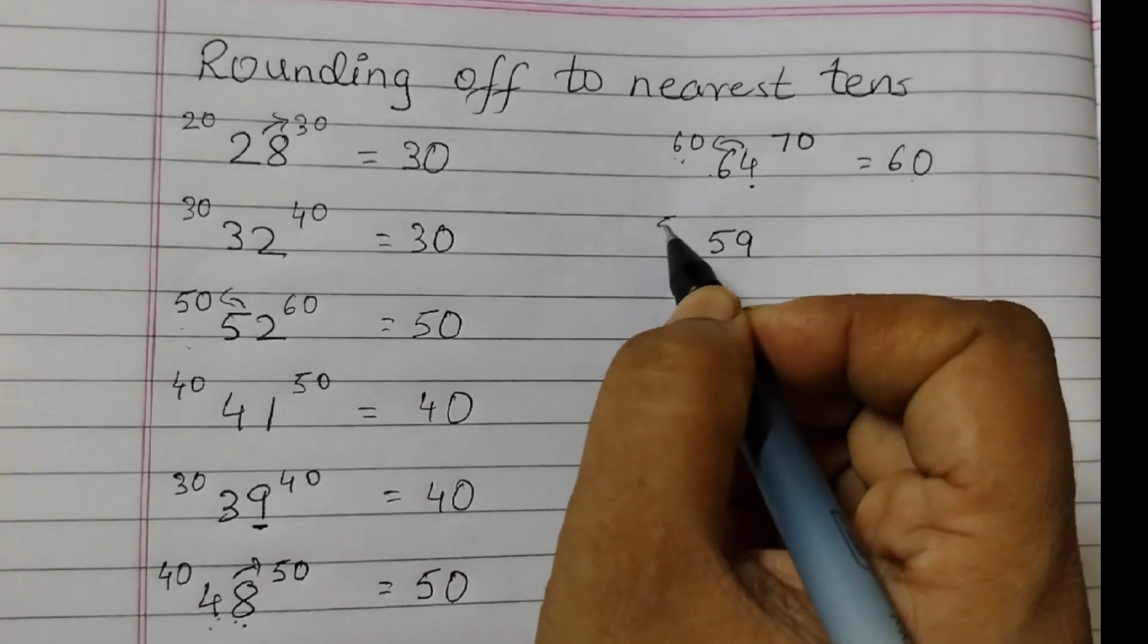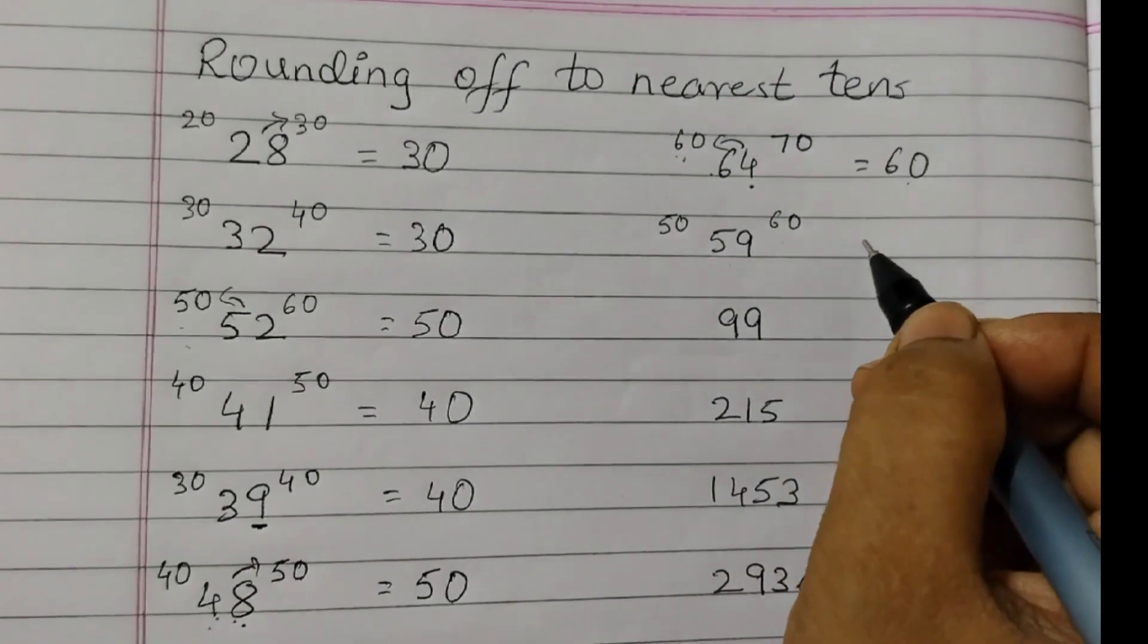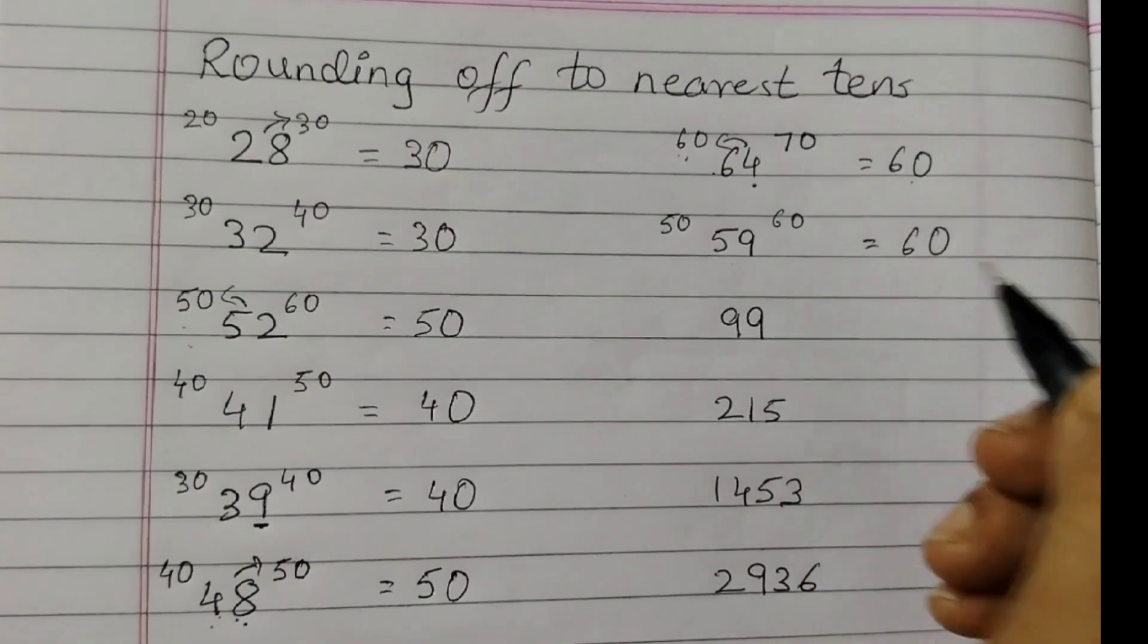59 is between 50 and 60. 59 is closer to 60, so rounded off to 60.